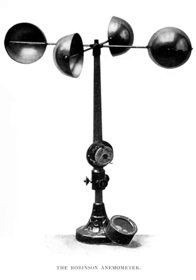A common anemometer for basic use is constructed from a ping-pong ball attached to a string. When the wind blows horizontally, it presses on and moves the ball. Because ping-pong balls are very lightweight, they move easily in light winds. Measuring the angle between the string-ball apparatus and the vertical gives an estimate of the wind speed. This type is mostly used for middle school level instruction, but a similar device was also flown on the Phoenix Mars lander.